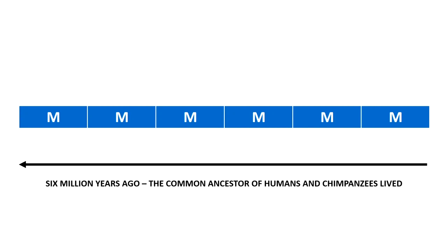All of those human ancestors have either been bred into the human population or died off, so humans are really the only representative of that genus left. Our closest relative is the chimpanzee, and chimpanzees are actually pretty distantly related to us. To find the common ancestor of humans and chimps, you'd have to go back six million years. There was an animal around that time that was the distant ancestor of both us and our closest relative.